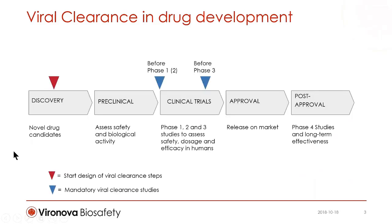Virus clearance studies are performed at two stages in the development of a new drug: first before phase one, and then more extensively before phase three. Prior to phase three, virus validations should demonstrate the capacity of the process to reduce a range of viruses with different physical-chemical properties. This is done by testing two or more process steps.